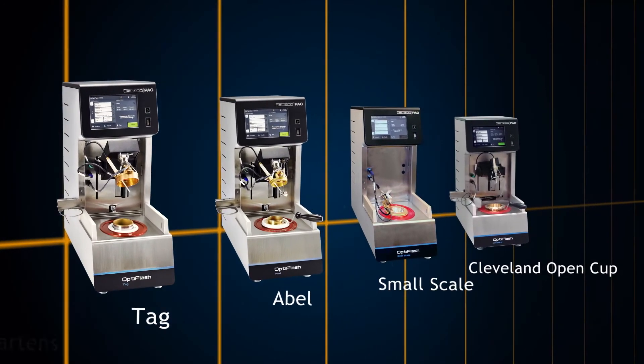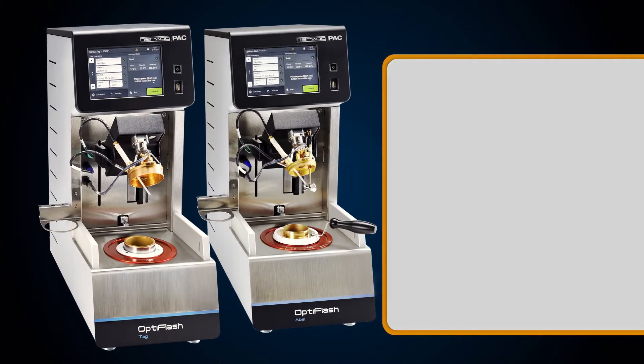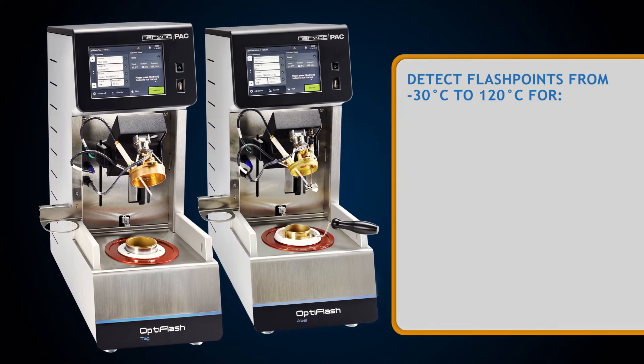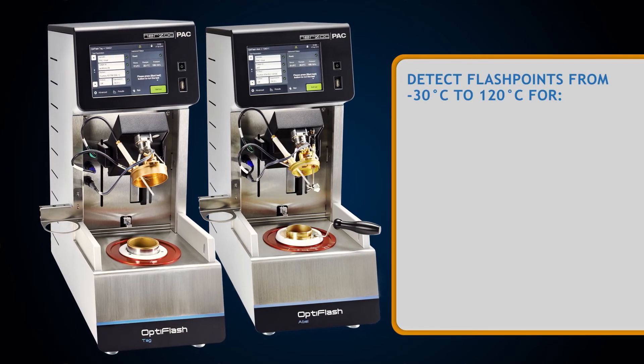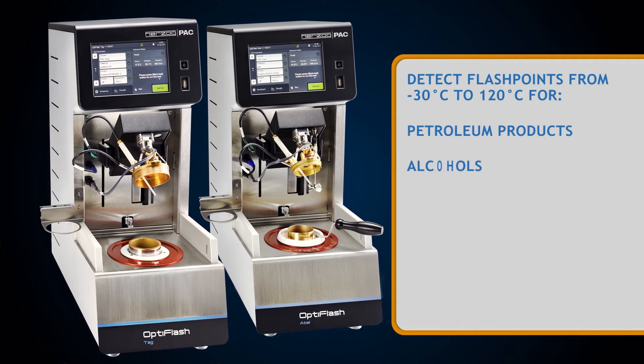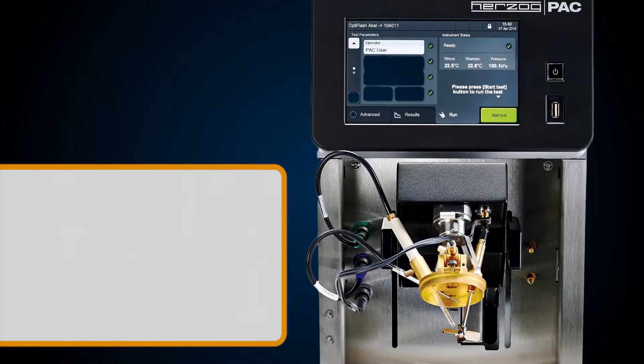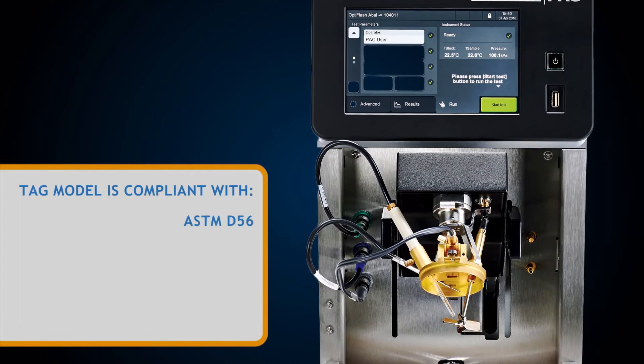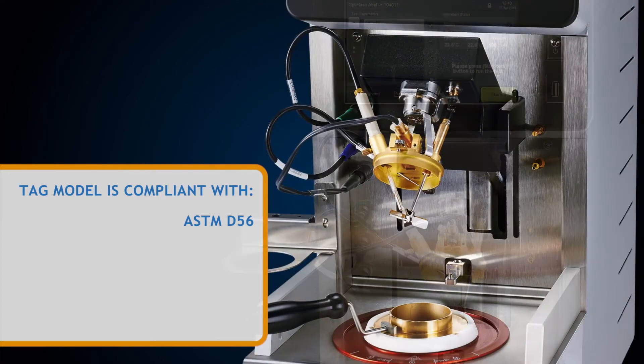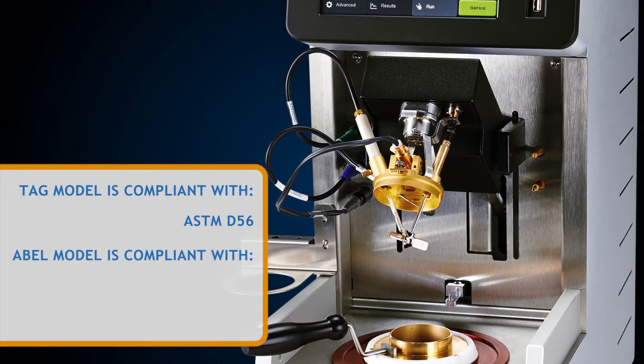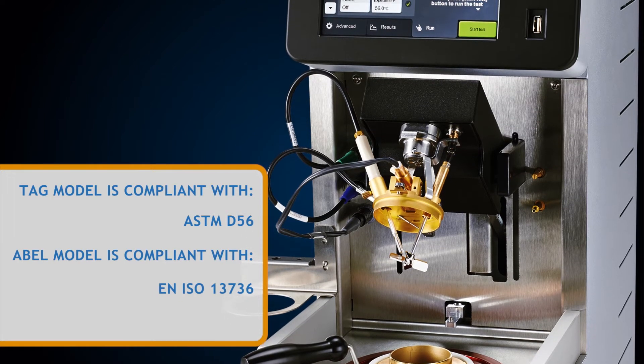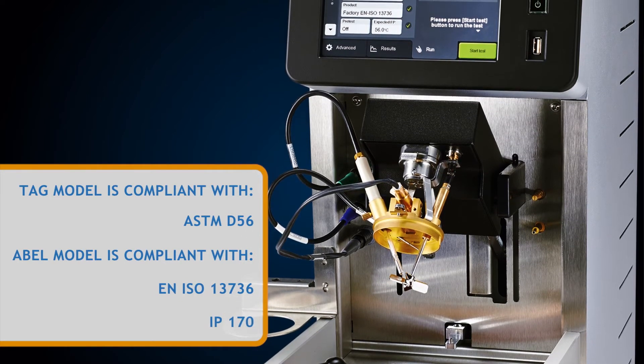The OptiFlash Tag and OptiFlash Able models accurately detect flashpoints from negative 30 to 120 degrees Celsius for petroleum products, alcohols, solvents, chemicals, food and beverages. The Tag model is fully compliant with ASTM D56. The Able model is fully compliant with ENISO 13736 and IP170.